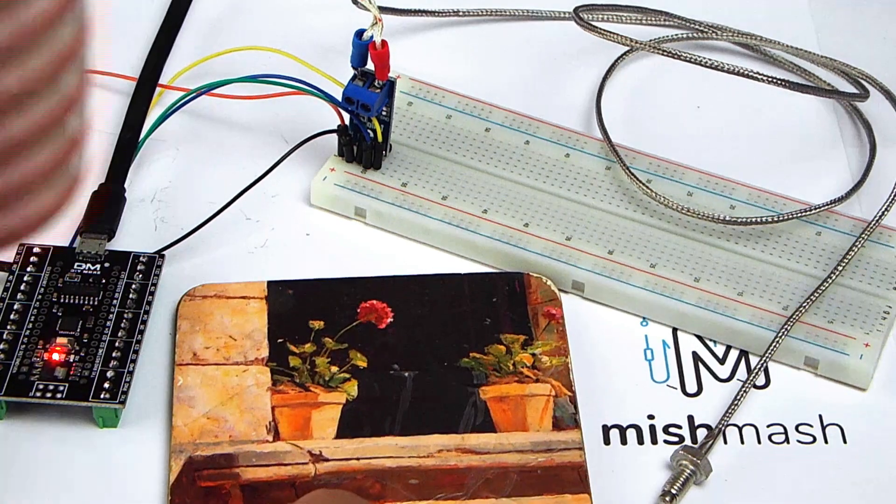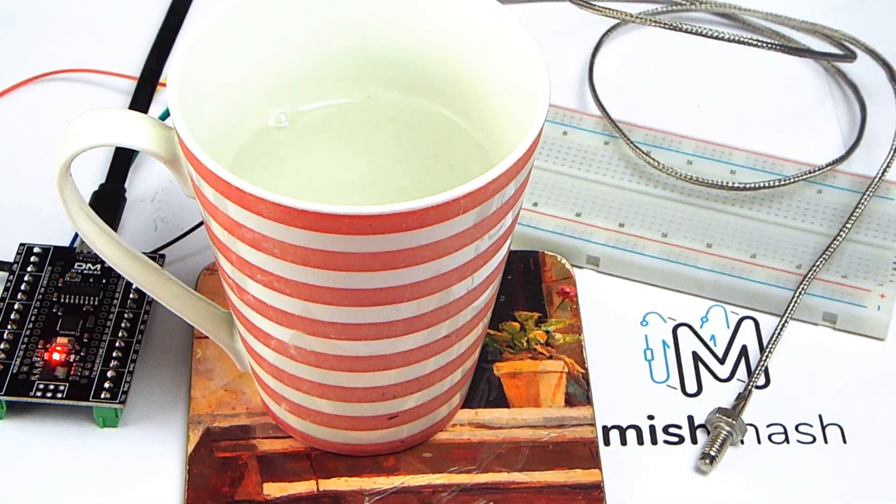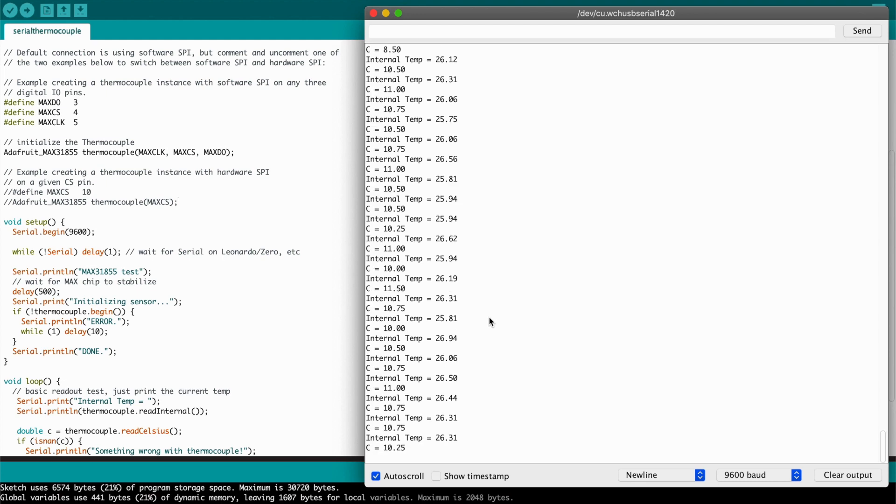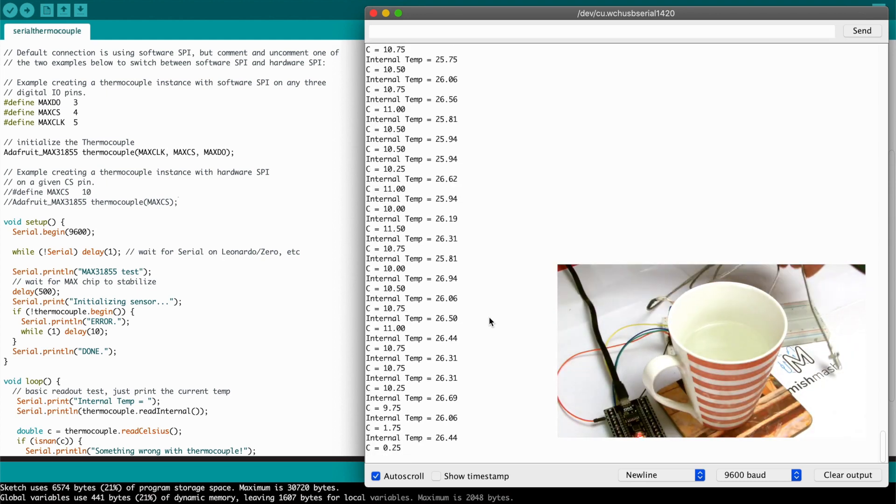So I'm going to do a test. I have a cup of hot water. I'm going to insert the thermocouple into the cup. So at the moment it's reading 10-12 degrees with some errors. And now I've put the thermocouple into the cup. Immediately see it rising. It seems to have stabilized at 58-57 degrees Celsius.